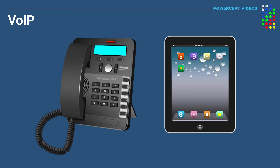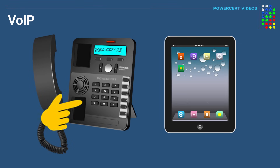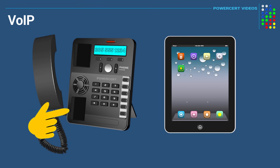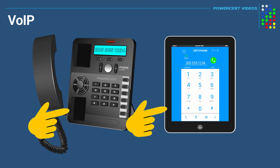So how does VoIP work? Whenever you want to make a phone call using VoIP, you pick up the receiver and dial the number just like a landline. Or if you're using a softphone, you open up the application and type in the number.